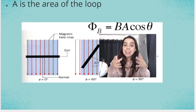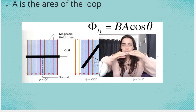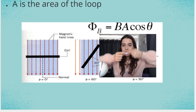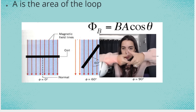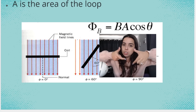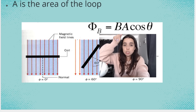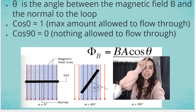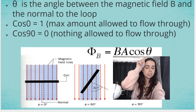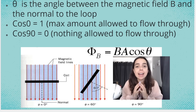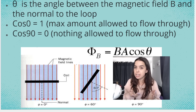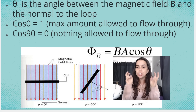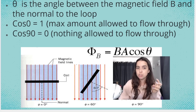Now let's look at A. A is the area of the loop — so whether I have a small circle or a big circle, it's the area of that shape, measured in meters squared. Then we have cos of an angle, theta. This angle is the angle between the magnetic field (the field lines, which is B) and the normal to the loop. I will show you what the normal to the loop is.